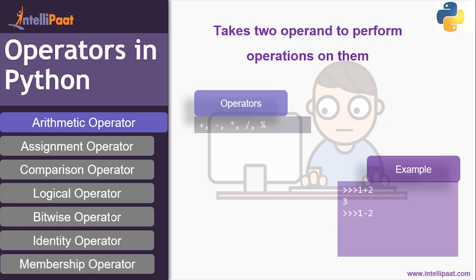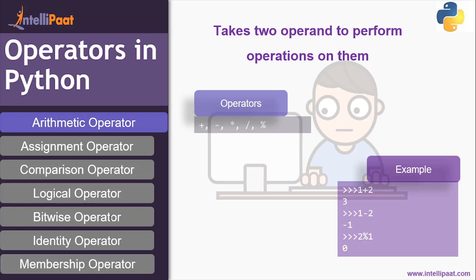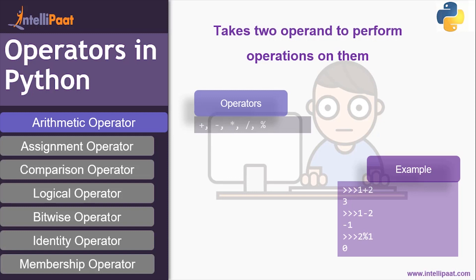For example: one plus two — one and two are the operands and plus is the arithmetic operator. One minus two — minus is an arithmetic operator. Two mod one — mod is also an arithmetic operator.